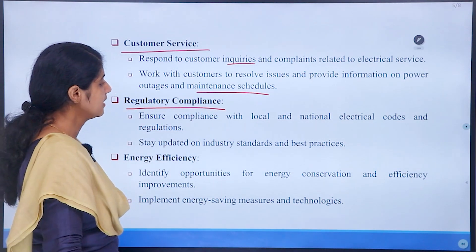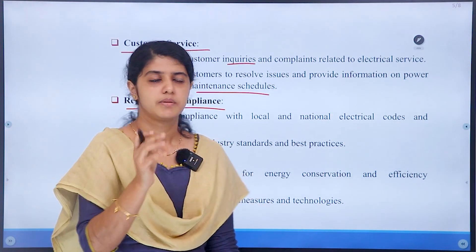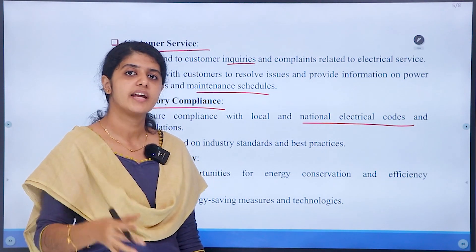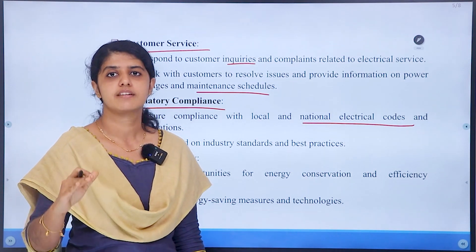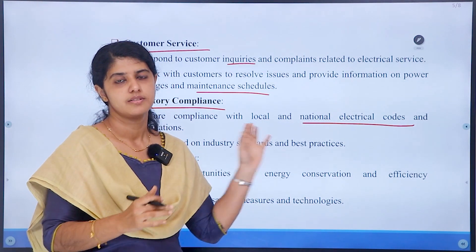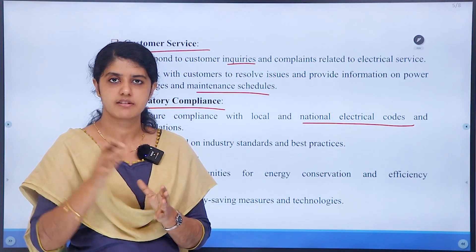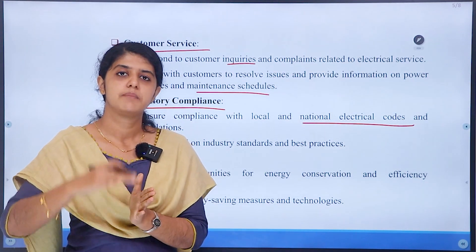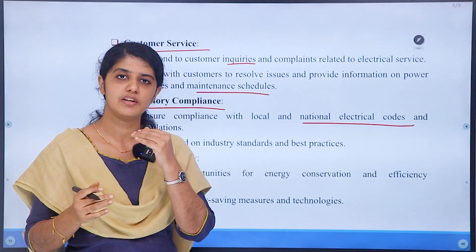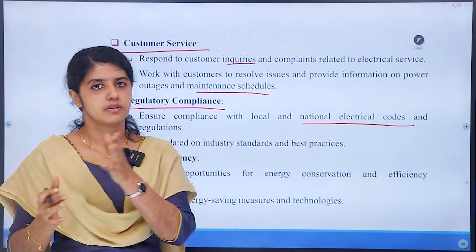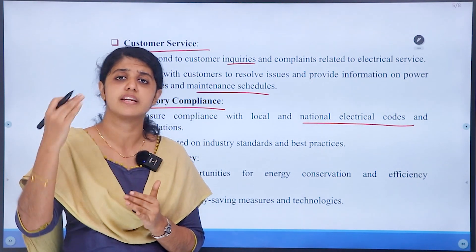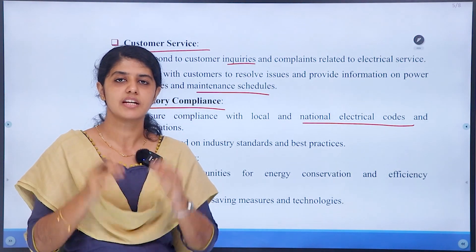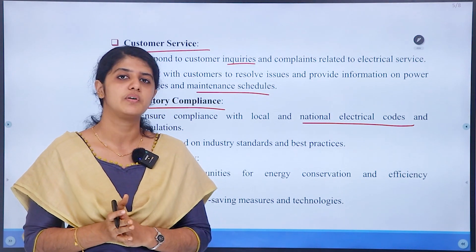Then, regulatory compliance. National Electrical Code or IS rules are very important. If we have these regulations, we need to check the responsibility of a sub-engineer. For a new electrical installation, whether single-phase or three-phase, all connections must comply with regulations — voltage levels, frequency, and power levels all need to meet the required standards. That is a duty of the sub-engineer.